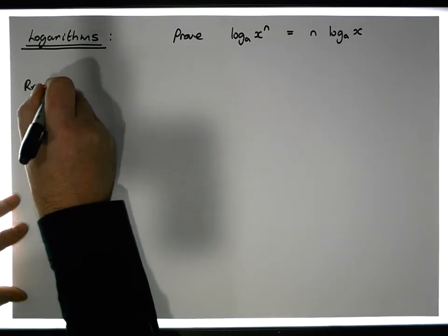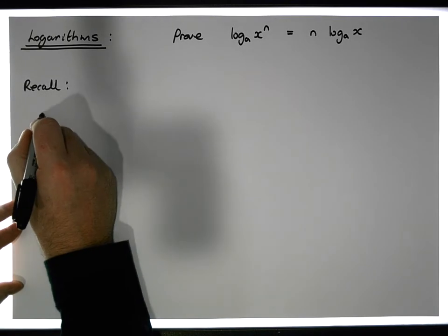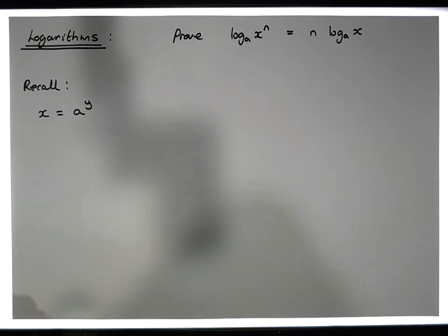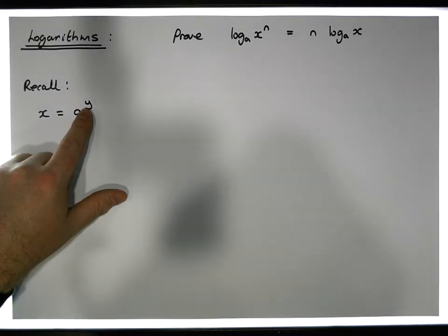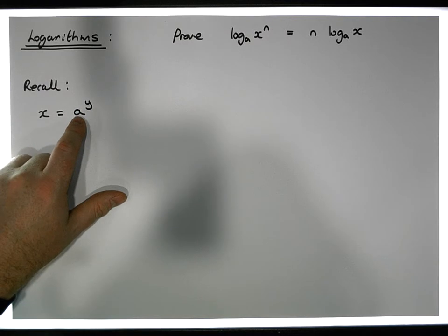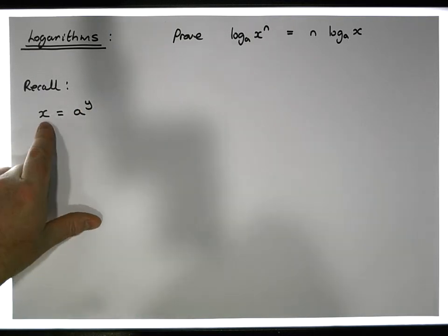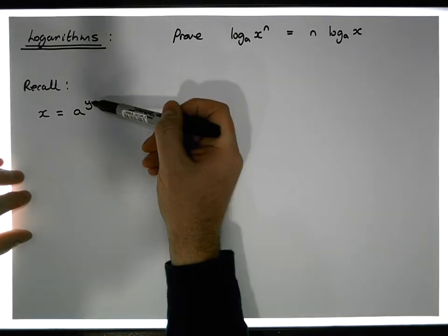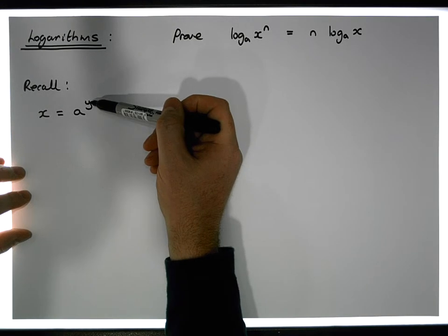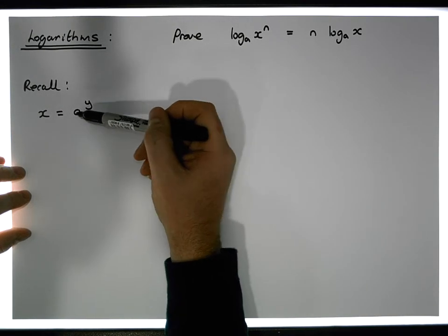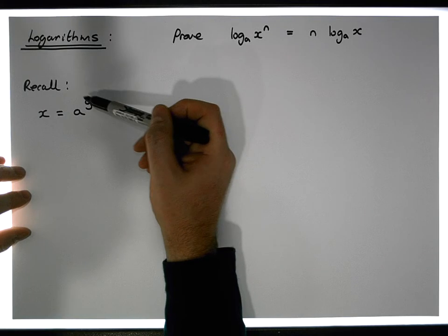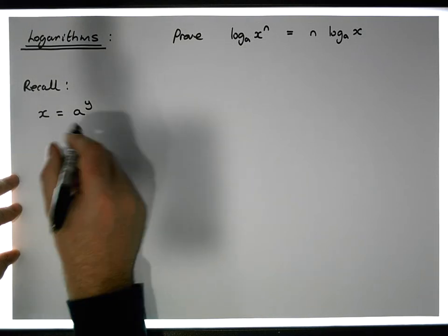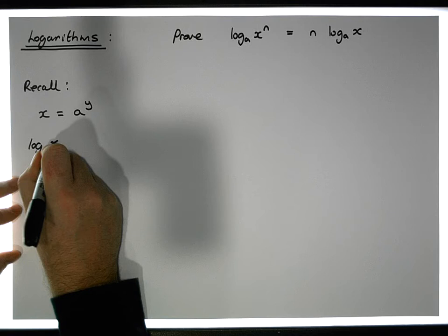If x is equal to a to the power of y, what this means is that y is the exponent — if I raise a to this particular power, what I get is x. A logarithm is effectively the exponent; it's the power that some base needs to be raised to in order to achieve a specific value.